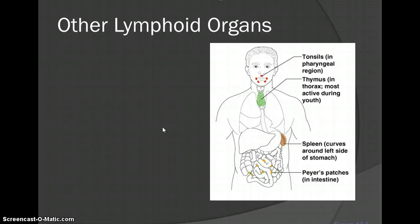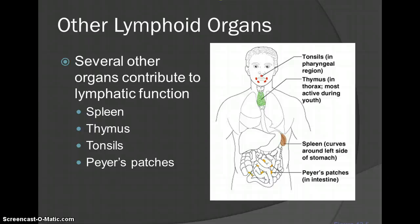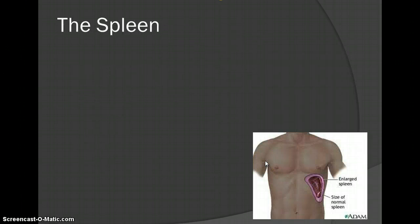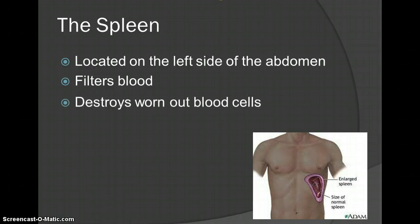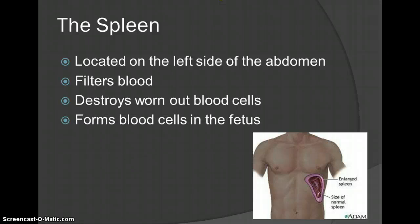The main organs of your lymphatic system are: your spleen, your thymus, your tonsils, and Peyer's patches. First, your spleen — it's a huge part. Can you live without your spleen? Yes, but you have to be extra careful if you get it taken out. It's located on the left side of your body. Its job is to filter blood, destroy worn-out blood cells, and form blood cells in the fetus. They were measuring my son's spleen during pregnancy to make sure I wasn't attacking him.